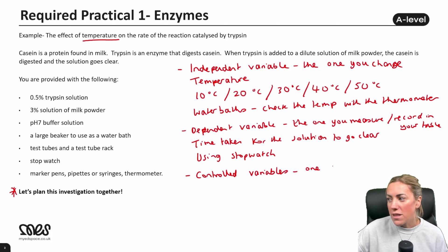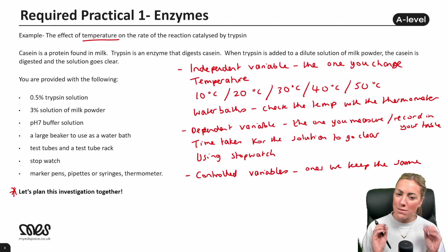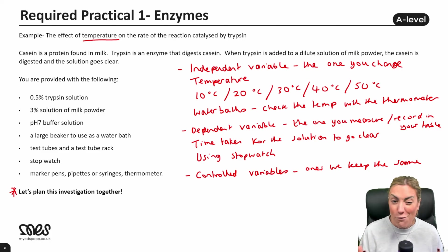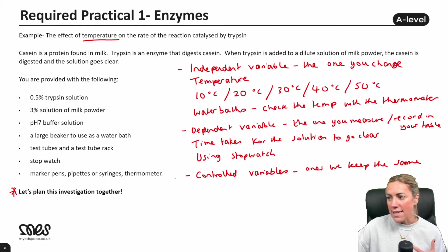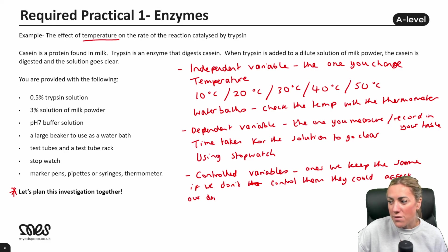Controlled variables are the ones we keep the same. Saying 'we keep them the same so it's a fair test' won't get you marks at A-level. What you need to say is: they are the ones we keep the same because if we don't control them, they could or would affect our dependent variable.